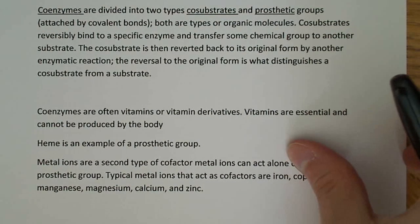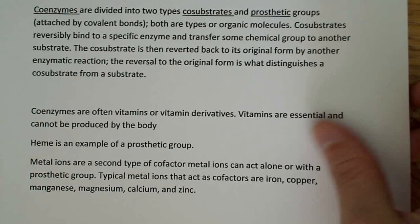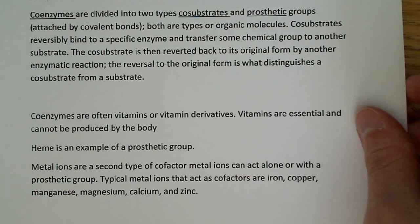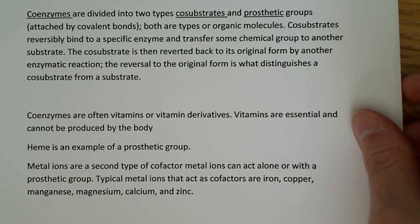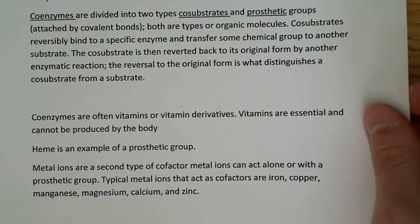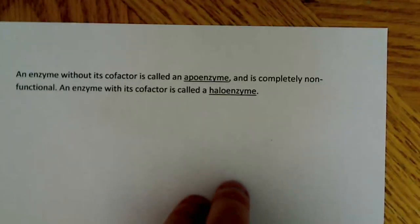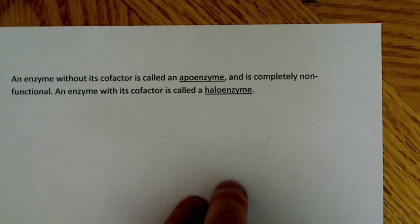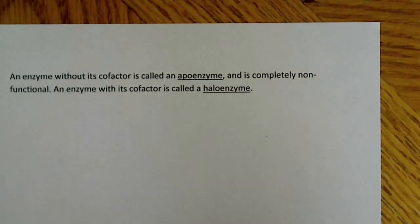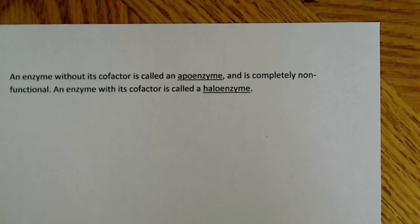Metal ions are a second type of cofactor and can act alone or within a prosthetic group. Typical metal ions that act as cofactors are iron, copper, manganese, magnesium, calcium, and zinc. For example, with cytochromes you can go from Fe2+ and it becomes oxidized to Fe3+, while with hemoglobin the heme group stays in the Fe2+ state. Finally, an enzyme without its cofactor is known as an apo-enzyme and is completely non-functional, while an enzyme with its cofactor is called a holo-enzyme.